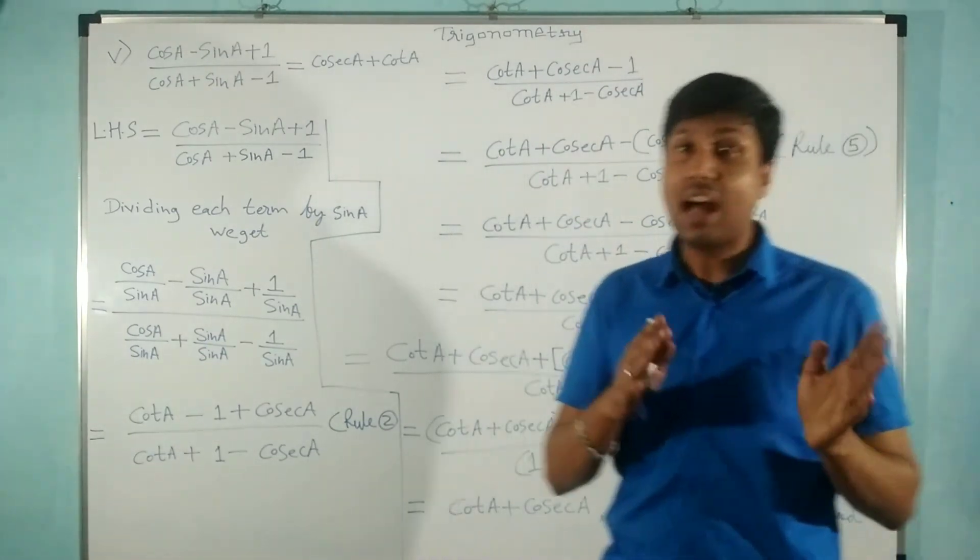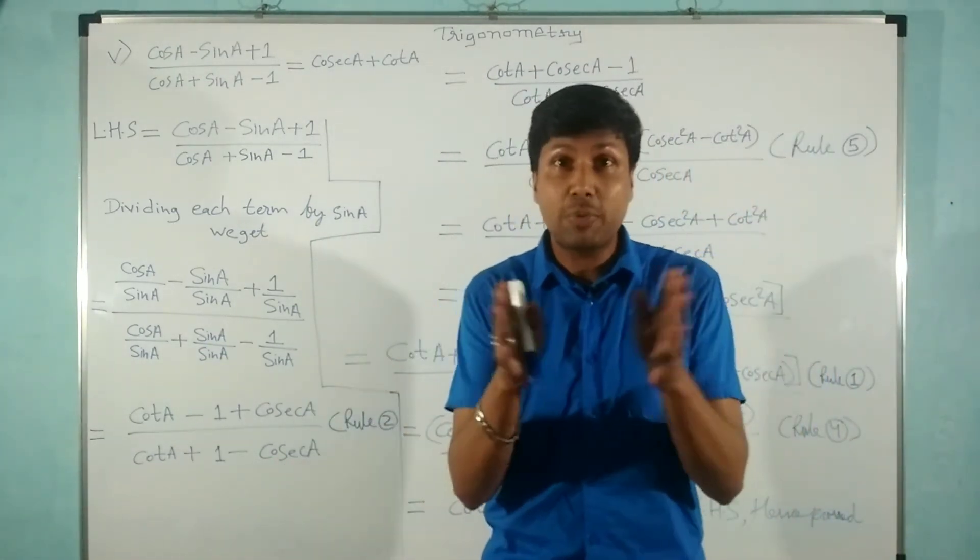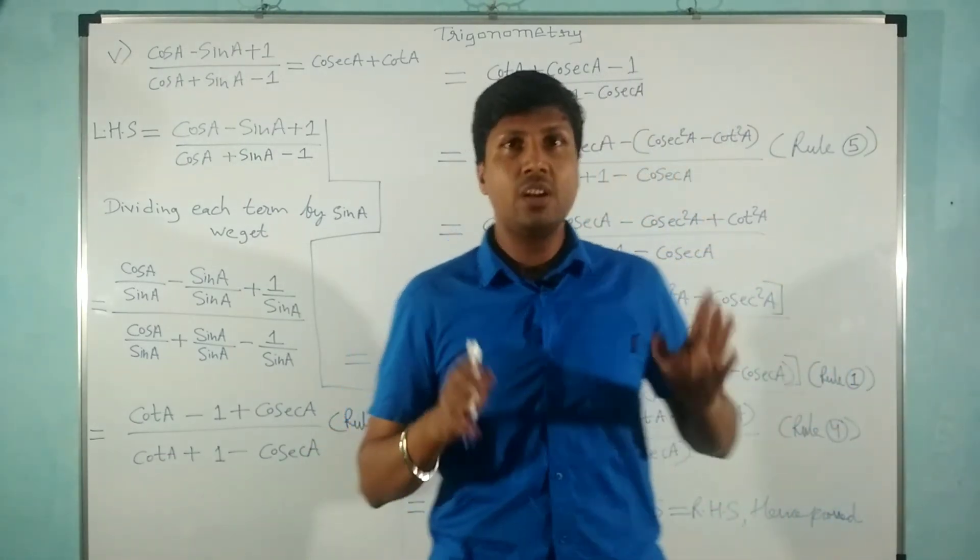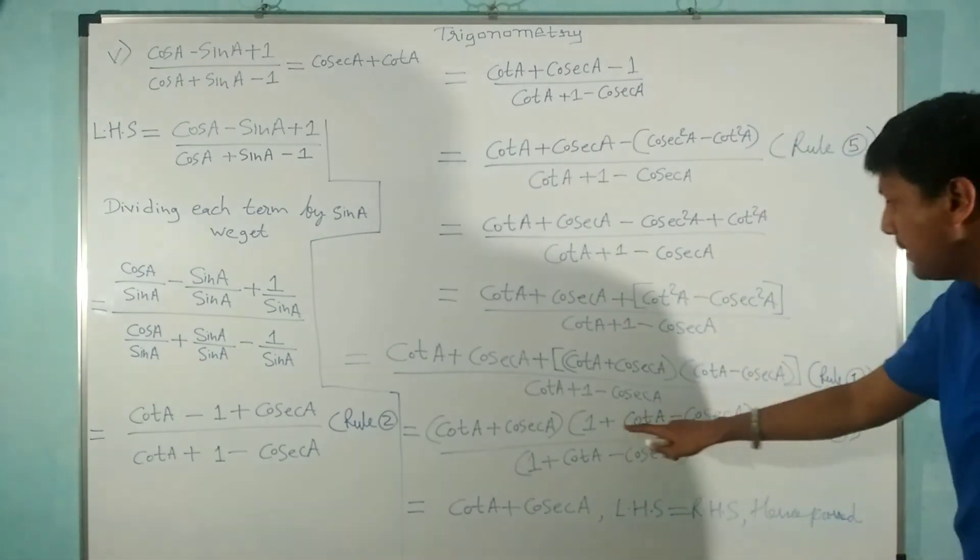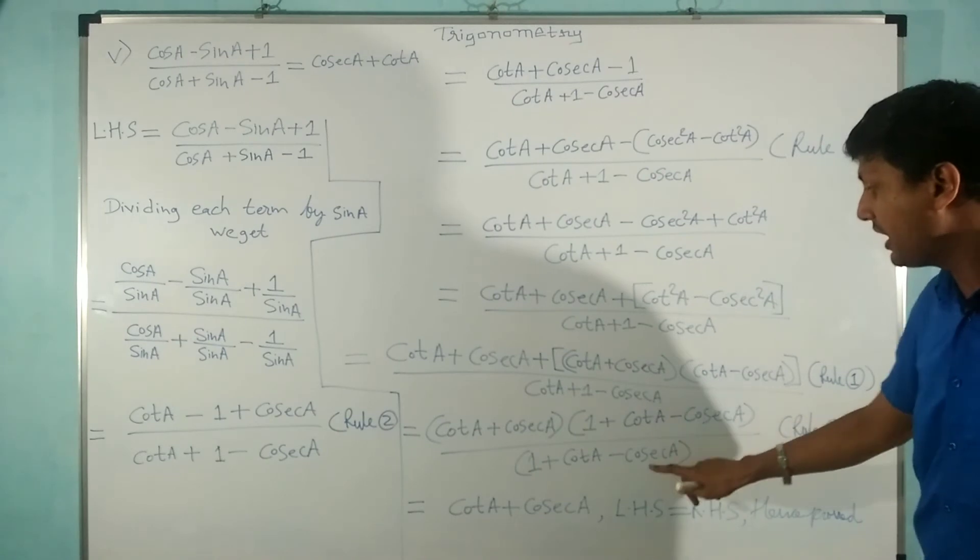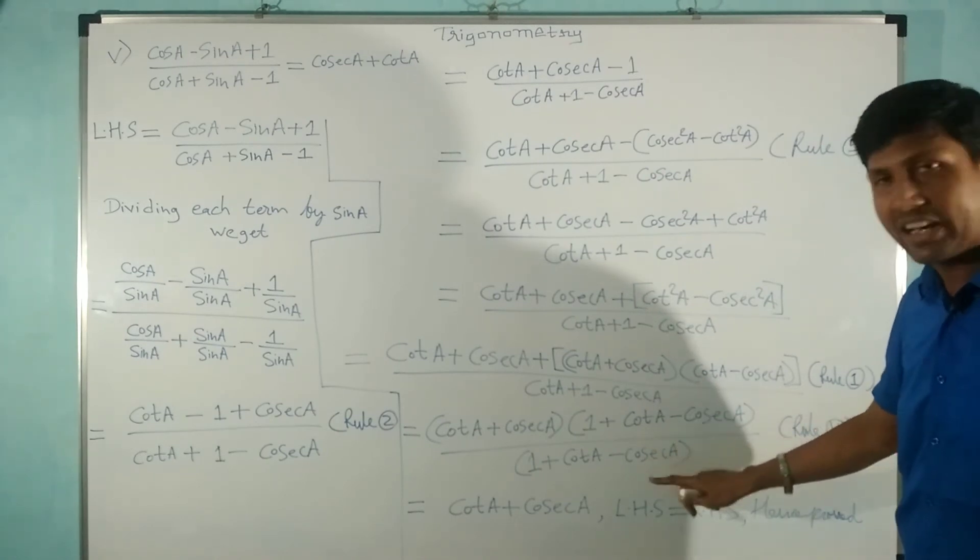That is our rule number four—to take common terms outside the bracket so that the expression can get simplified or cancelled. After this, you can observe that (1 + cot A - cosec A) is in the numerator and denominator.